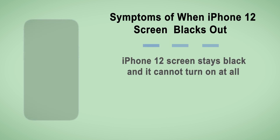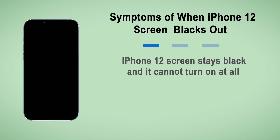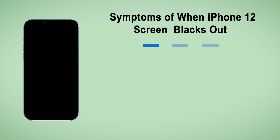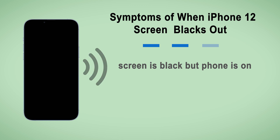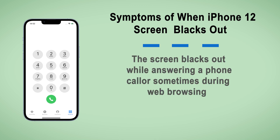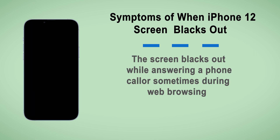Let's look at three situations of the black screen issue. First, your iPhone 12 screen stays black and it cannot turn on at all — this is also called the black screen of death. The second one is the screen is black but the phone is on: when iPhone 12 is booting up, you feel it vibrating or you can hear alerts and sounds, but what you see is a completely black screen. The third one, which many users have been facing, is the screen blacks out while answering a phone call or sometimes during web browsing.